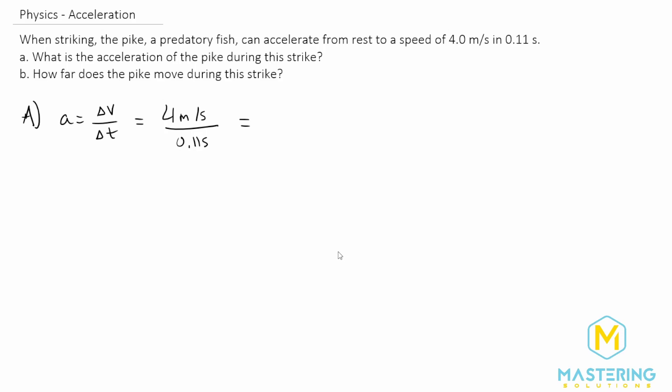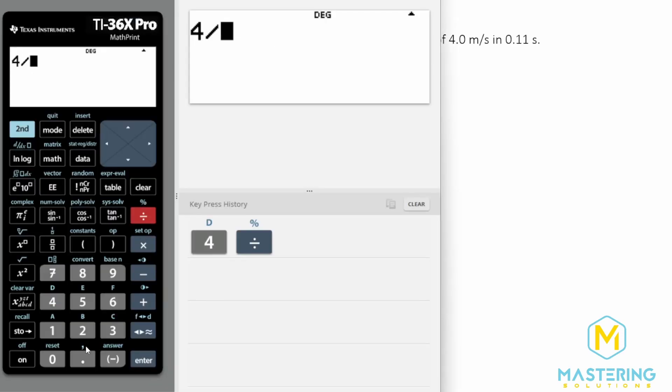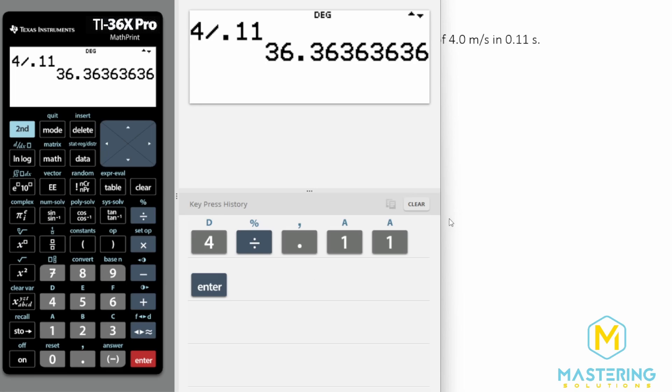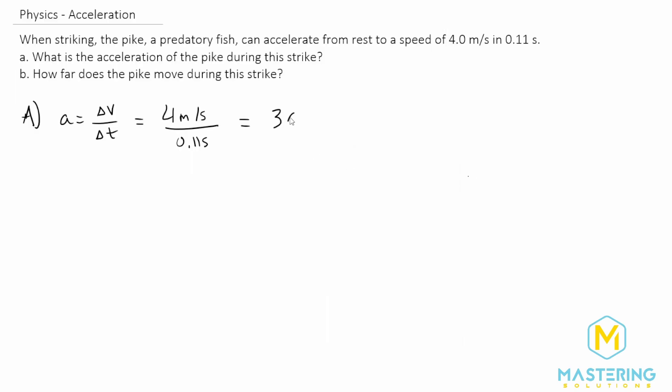And so now let's calculate that. 4 divided by 0.11 gives us 36, so it'll round down to 36 meters per second squared. So that is the acceleration during the strike for the pike.